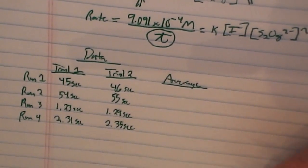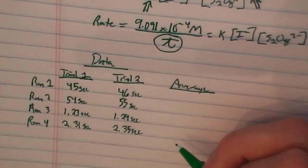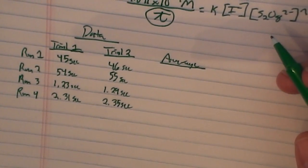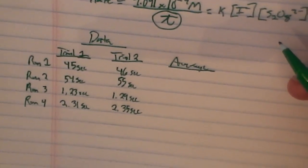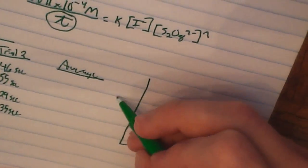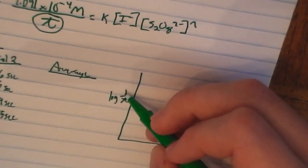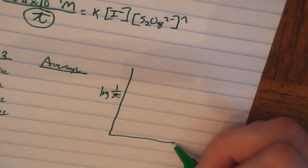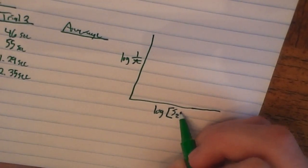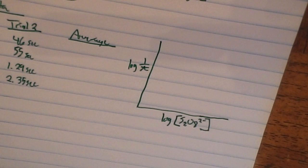You need to average the times for each run. Once you've done that, you're going to make a graph. This is explained in the analysis part of the introduction. We're going to plot log(1/t) — where t is the average time you measured — on the y-axis, and log of the persulfate concentration on the x-axis. Note that the persulfate concentration changes throughout the experiment in beaker one.